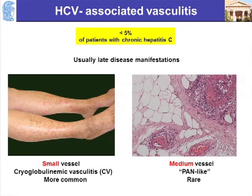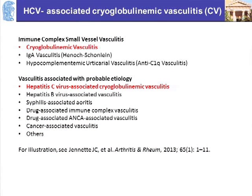Although Hepatitis C virus is a common infection, fortunately vasculitis associated with the virus is rare — less than 5% of patients with chronic Hepatitis C. And we have to remember that this doesn't occur early in the disease; usually this is a late disease manifestation. There are two types of vasculitis described in these patients: the most common one is cryoglobulinemic, and there are some reports of a PAN-like involvement of medium vessels by the virus, which is much more rare.